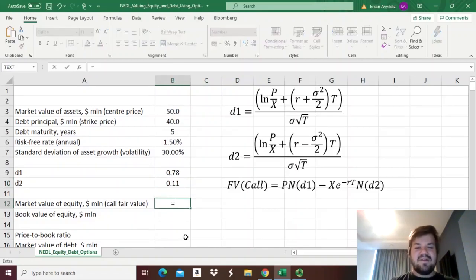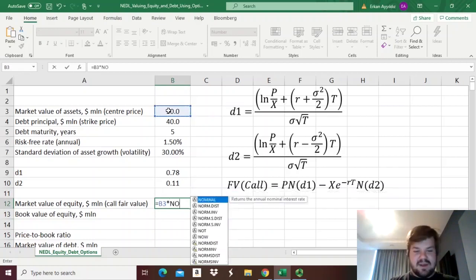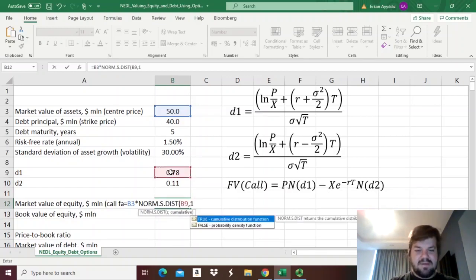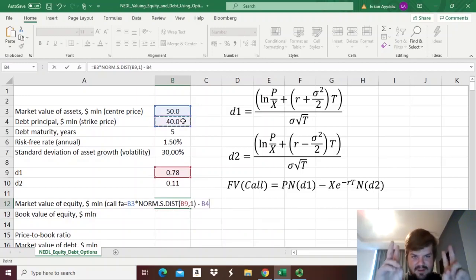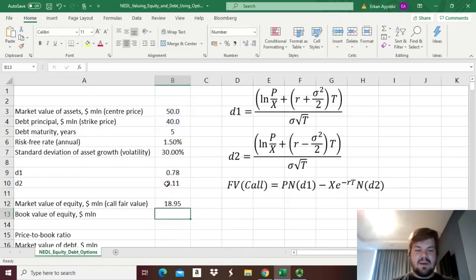So, to figure out the market value of equity, using the logic of the Black-Scholes formula, we just need to plug in those values into the formula. So, first we need to multiply the center price, so the market value of assets, times the standard normal distribution of d1, and we need to take a cumulative, minus the strike price, which is the debt principle, times the exponent of minus the risk-free rate, times maturity in years, times, again, normal standard distribution of d2, cumulative. And we see that the market value of equity is equal to 18.95 million dollars.